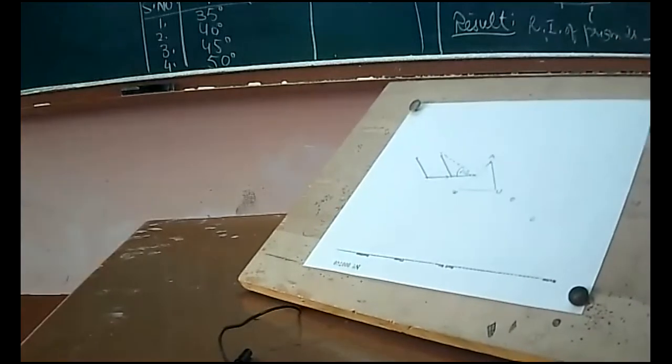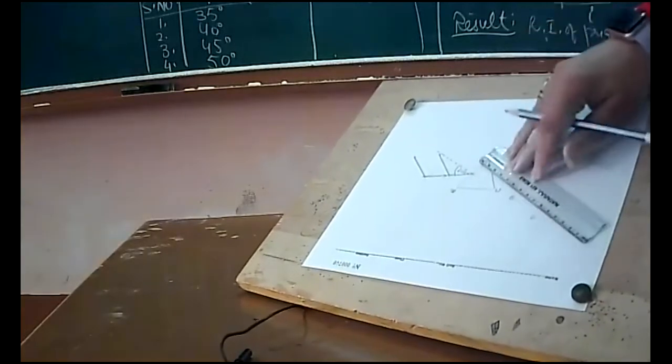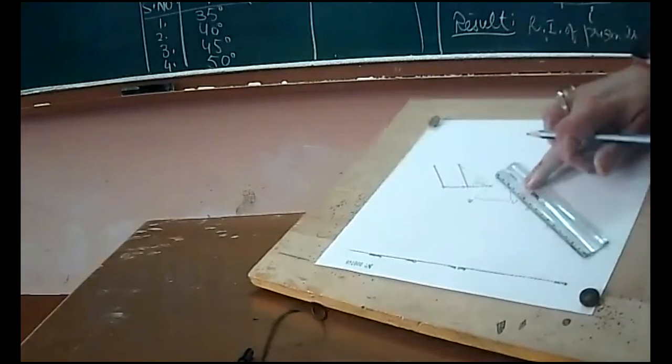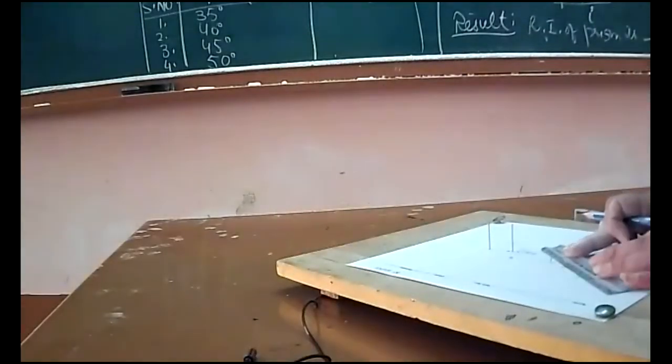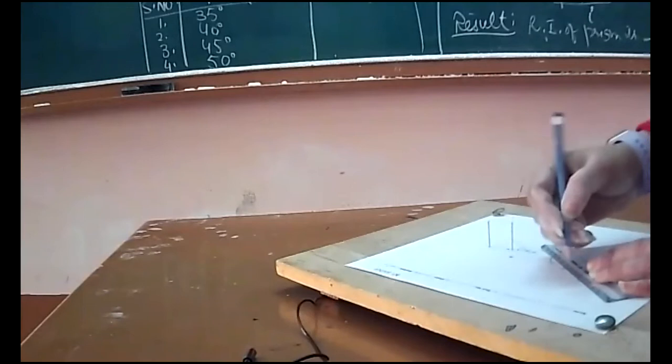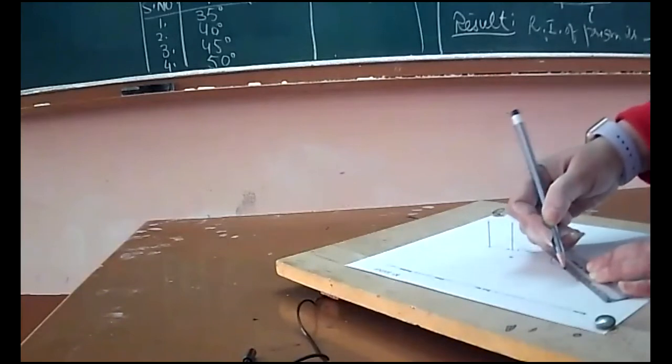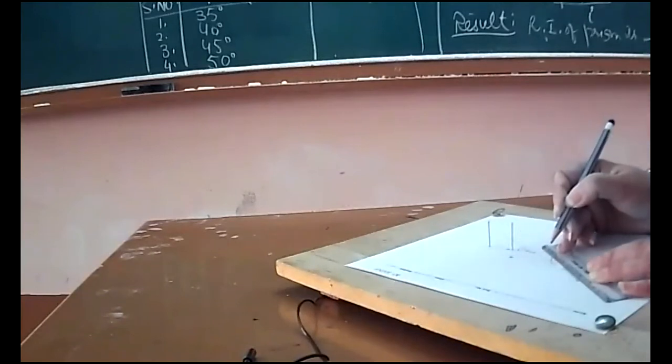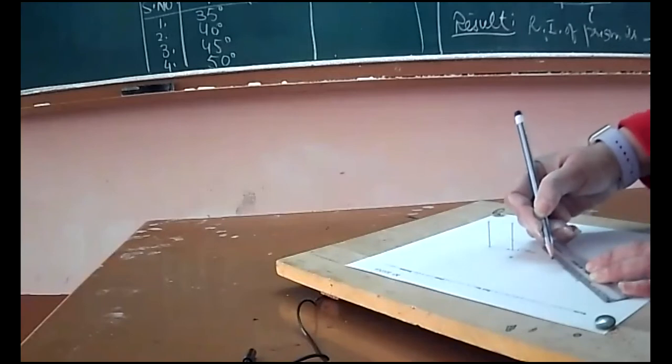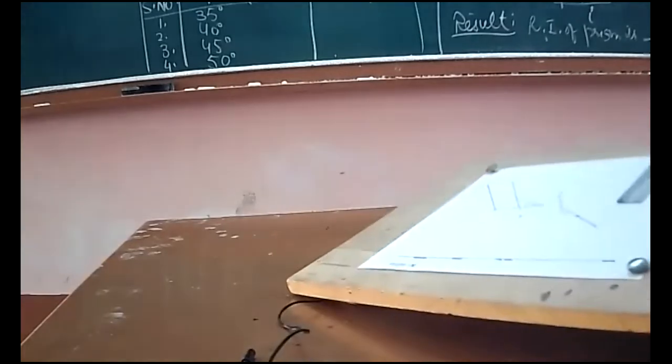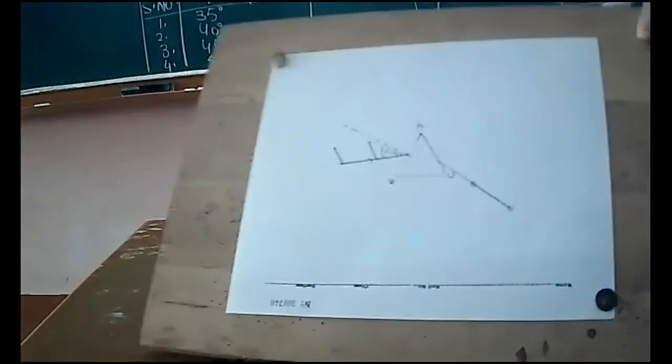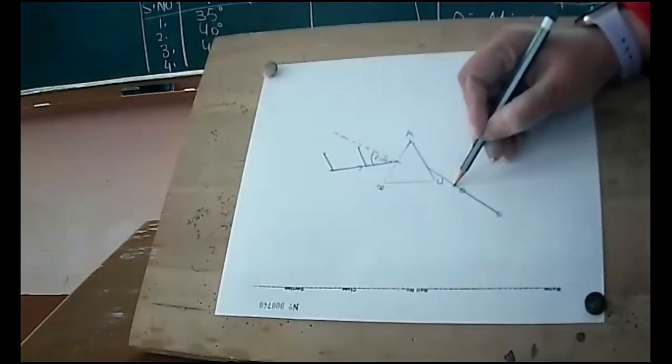Now I will mark the impression of these two pins. Remove the pins now, pick the prism up. Now we will join these two points with the scale back towards the prism. This is my emergent ray as I told you.